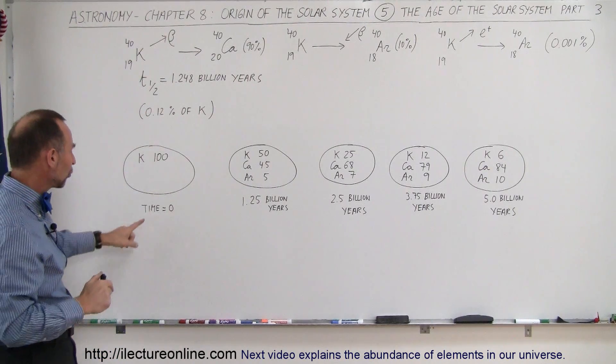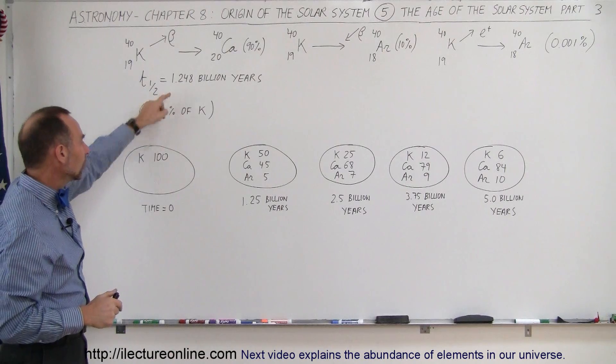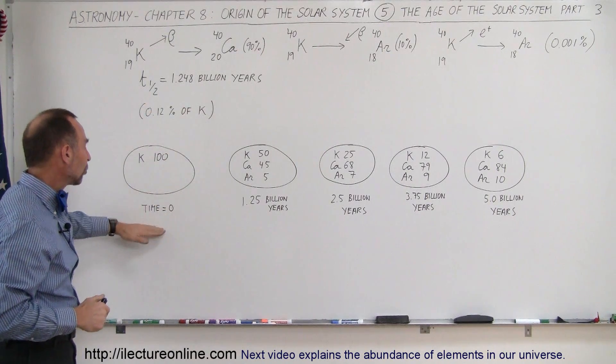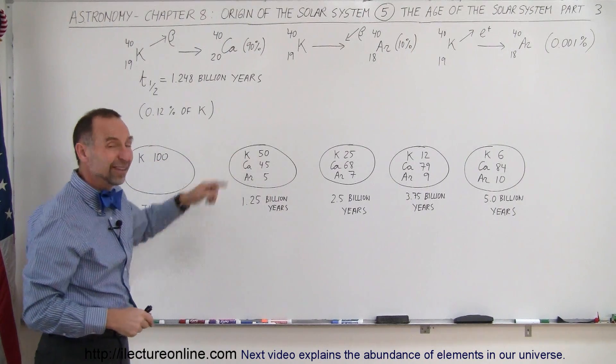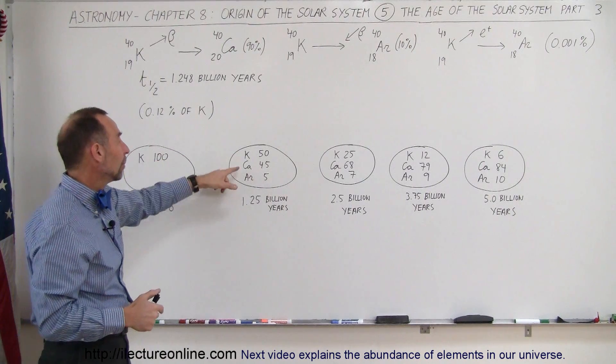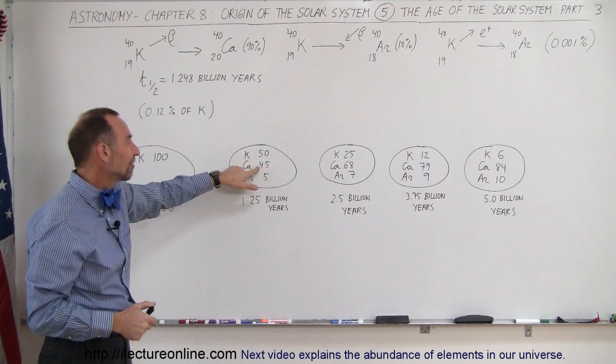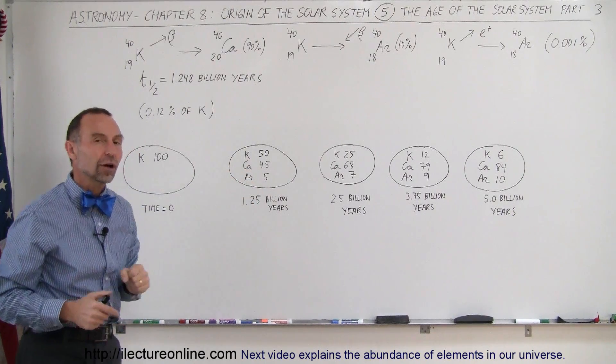But since the half-life is 1.25 billion years, after 1.25 billion years, half the potassium will have decayed. Since 90% of that decay becomes calcium, we have 45% calcium and 5% argon.